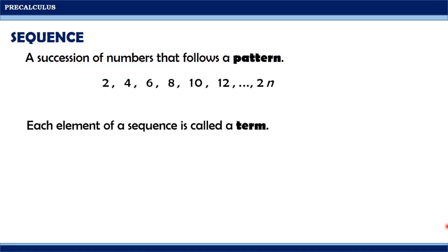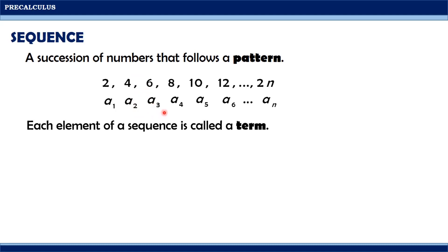Each element of a sequence is called a term. 2, being the first term, will be denoted by a1. 4, being the second term, will be denoted by a2. 6, being the third term, will be denoted by a3, and so on and so forth, up to 2n, which will be denoted by an, which we call the general term.